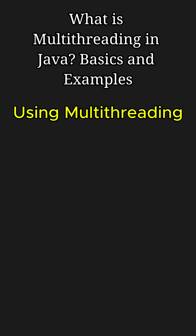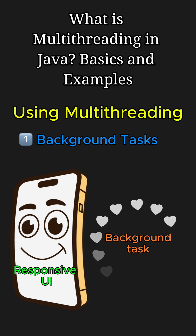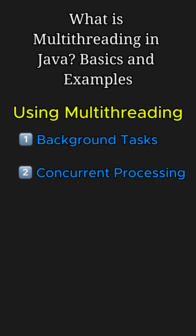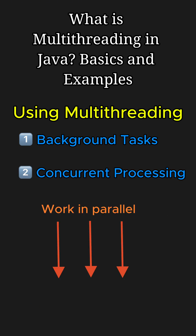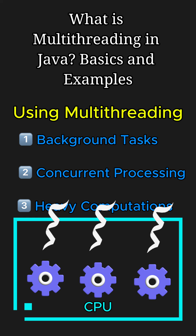When it comes to uses, multi-threading is useful in scenarios like performing background tasks — running long computations or network calls while keeping the main program responsive — and for concurrent processing, handling multiple independent tasks such as serving requests in a web application, and heavy computations, leveraging multi-core processors to split and parallelize intensive calculations.